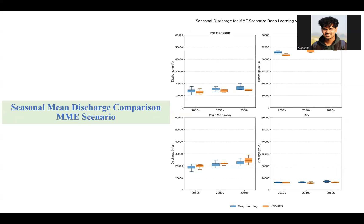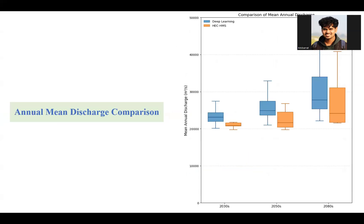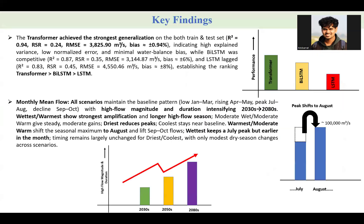Similar plots for the multi-model ensemble scenario show a similar trend. For annual mean discharge comparison by the 2080s, deep learning yields 27,000 to 30,000 cubic meters per second, while HEC-HMS yields 24,000 to 26,000 cubic meters per second. The central message is almost consistent between the two approaches.